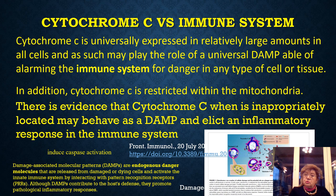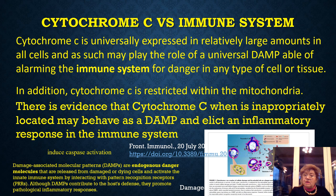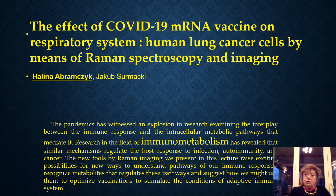Now we concentrate on cytochrome C versus the immune system. Cytochrome C is universally expressed in relatively large amounts in all cells and may play the role of a universal DAMP molecule — damage-associated molecular pattern molecule — which is able to alarm the immune system to danger in any type of cell or tissue. In addition, cytochrome C is restricted within the mitochondria, but evidence shows that when inappropriately located, it may behave as a DAMP molecule, alarming and eliciting an inflammatory response in the immune system. That is why we studied the effect of the COVID-19 mRNA vaccine on the respiratory system.